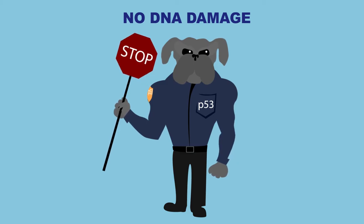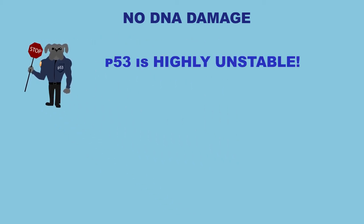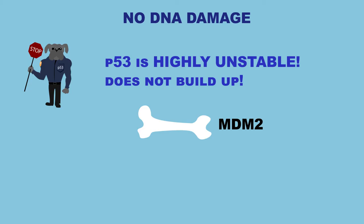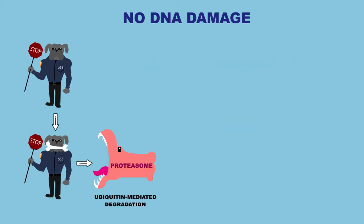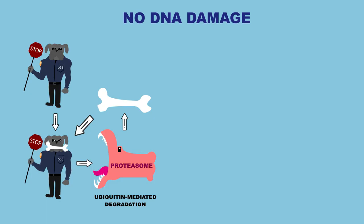In a cell lacking DNA damage, P53 is highly unstable and its concentration does not build up. This is thanks to the protein MDM2, which binds P53, marking it for ubiquitin-mediated degradation. The MDM2 protein itself is not degraded and can be reused for other P53 proteins.